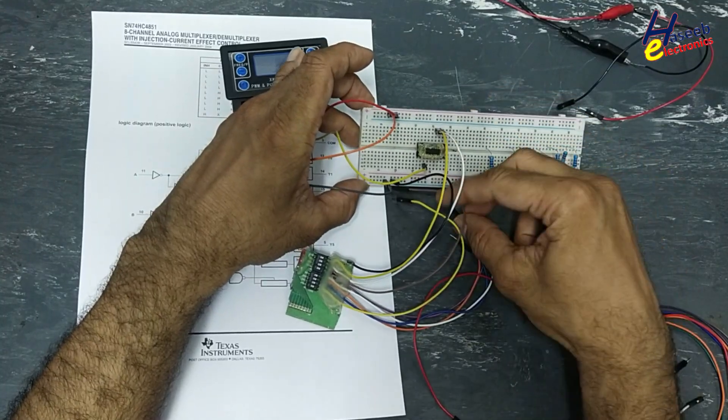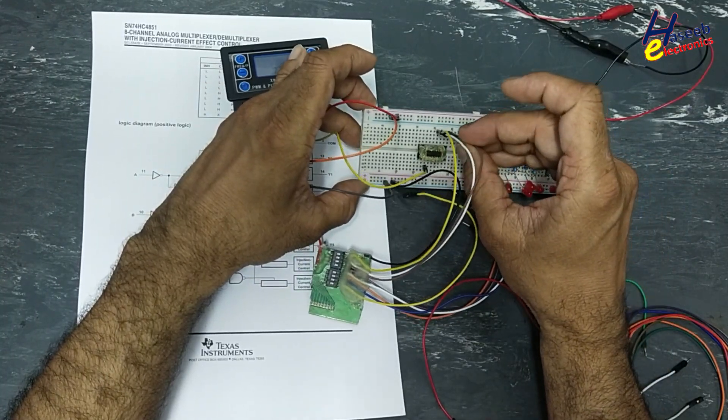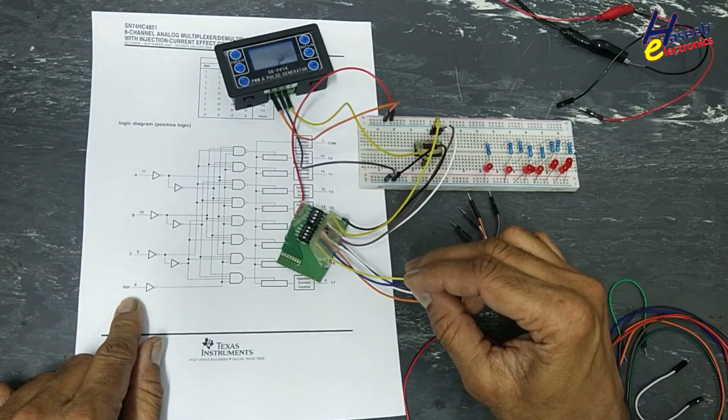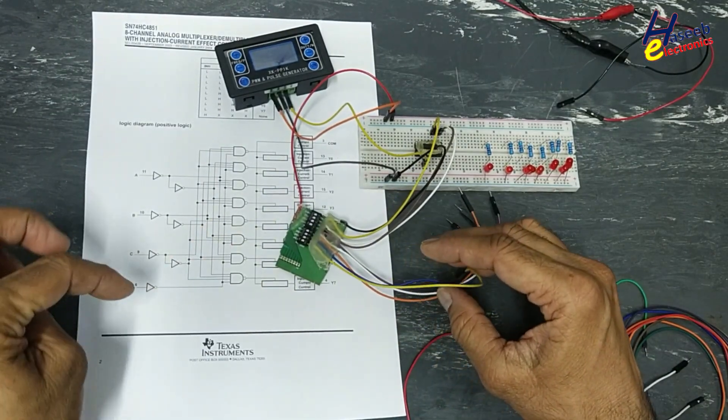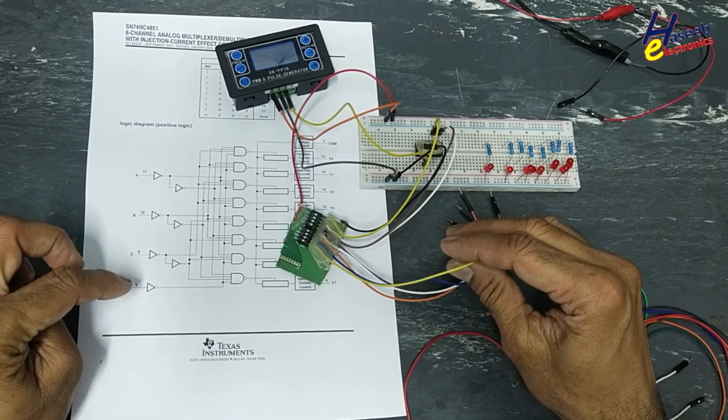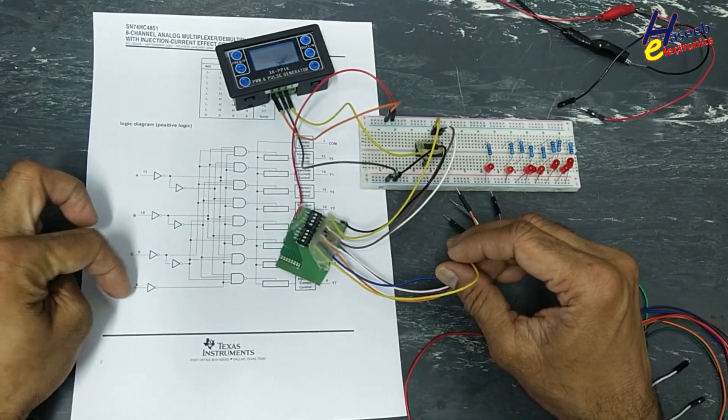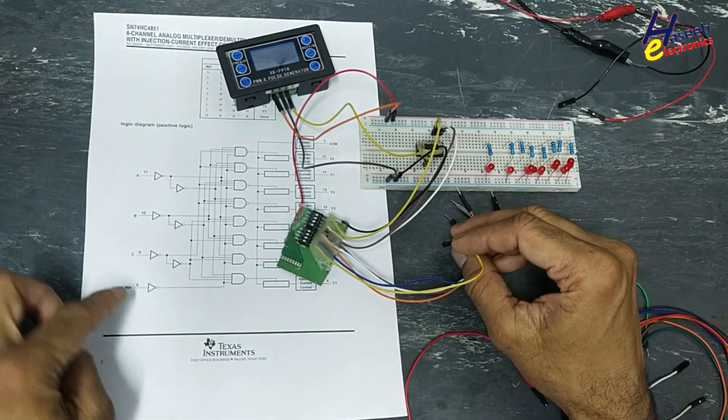We will use the inhibit signal that is chip enable. If this signal is low, this IC will work. If this signal is high, this IC will be in lock state.